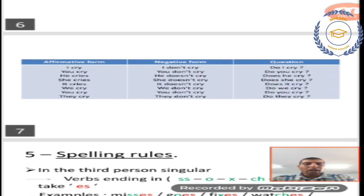I give you another example, different from the two first verbs. It's verb to cry. It's ended by Y. Affirmative form: I cry, you cry, he cries. Look, I change Y to I then I add ES. She cries, it cries. We cry, you cry, they cry. Negative form: I don't cry, you don't cry, he doesn't cry, she doesn't cry, it doesn't cry. We don't cry, you don't cry, they don't cry. Questions: Do I cry? Do you cry? Does he cry? Does she cry? Does it cry? Do we cry? Do you cry? Do they cry?